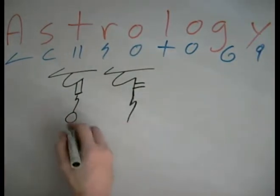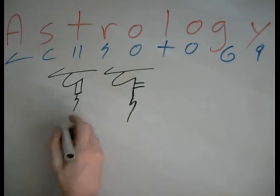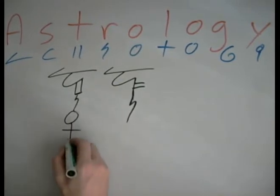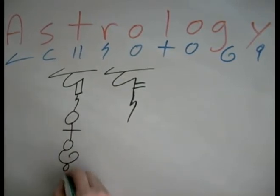So astro, sorry, O, L, O, G, Y. Now that's the simplest possible way to connect these letters.